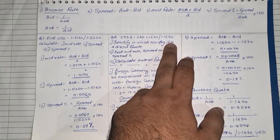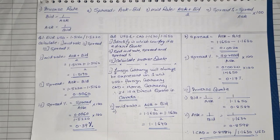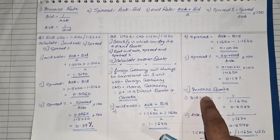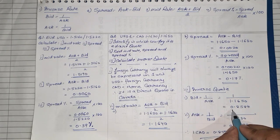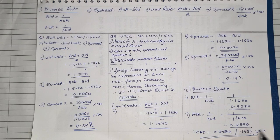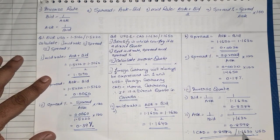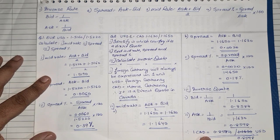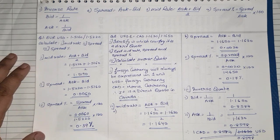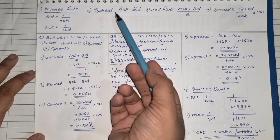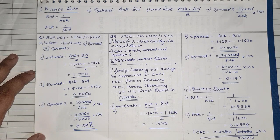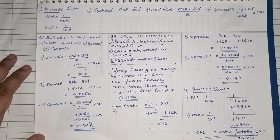We use the inverse quote when bid and ask rates are given together and you need to convert in reverse order. The inverse bid rate is always one upon ask, and the inverse ask rate is always one upon bid. So the new inverse quote is: 1 Canadian dollar equals 0.8584 / 0.8598 USD. These are the four formulas — inverse rate, spread, mid rate, and spread percent. I hope everyone understood. Thank you so much.